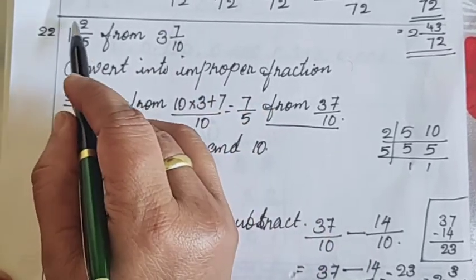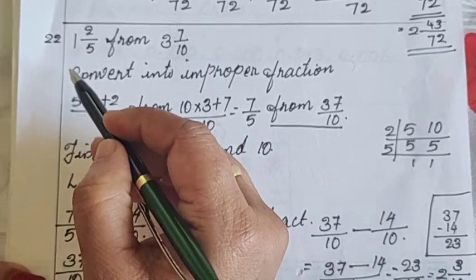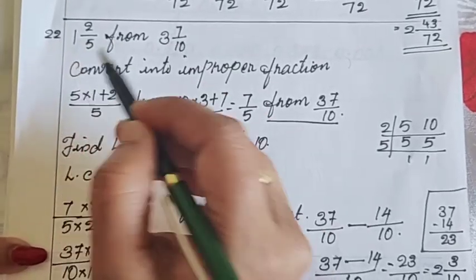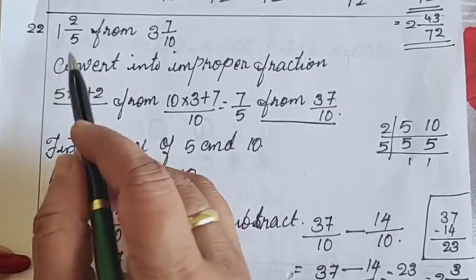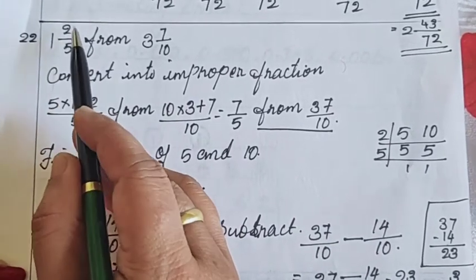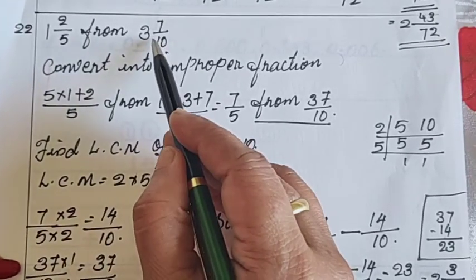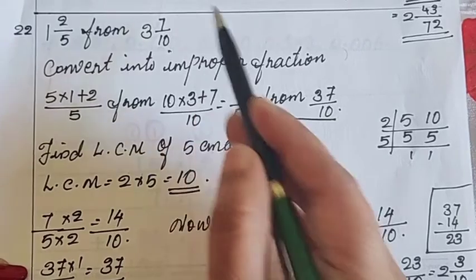So we have to make LCM first. Before that convert this mixed fraction into improper fraction. We already learned earlier how to convert a mixed fraction into improper fraction. Convert into improper fraction how? 5 multiply 1 plus 2 by 5. And for this fraction, 10 multiply 3 plus 7 by 10.